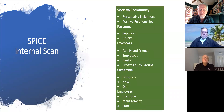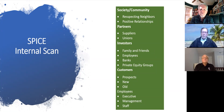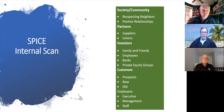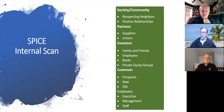There's also an internal scan using the acronym SPICE — what's going on in society, respecting neighbors, positive relationships with partners, which could include suppliers, unions, investors, family or friends, employees, banks, private equity, and customers. To do an effective job with the SWOT, you have to do this in the context of the numbers that are already there. Any observations as we move into the actual block covering strengths, weaknesses, opportunities, and threats?